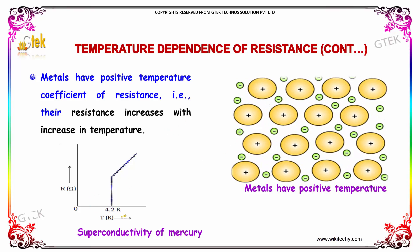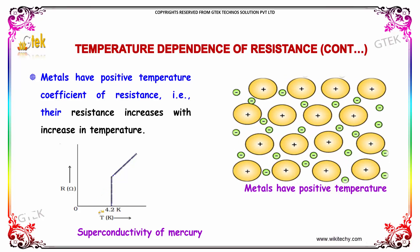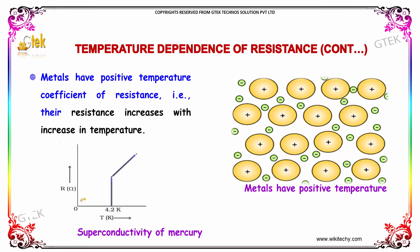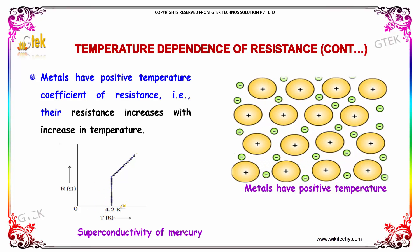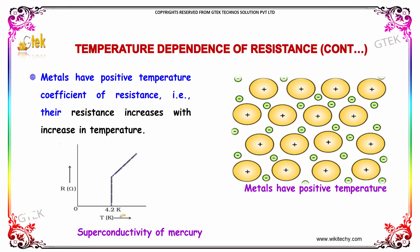This is the nature of mercury. At 4.2 Kelvin, it will become a superconductor with zero resistance.